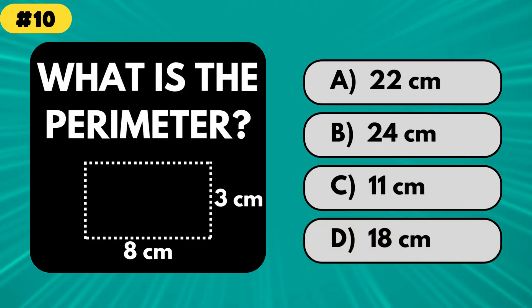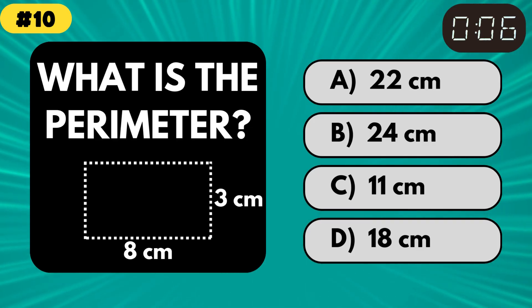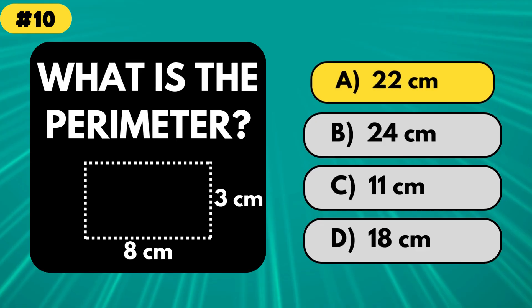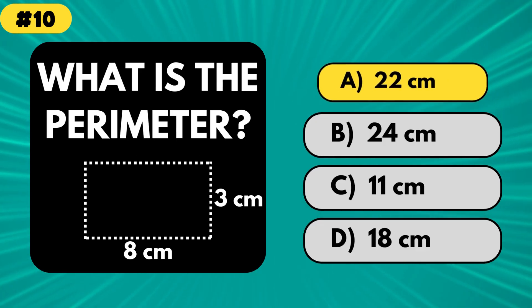What is the perimeter of a rectangle that's 8 centimeters long and 3 centimeters wide? 22 centimeters. Finding the perimeter is adding up all the sides. It's like measuring a fence.